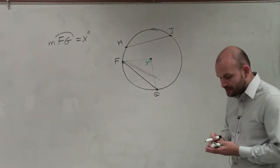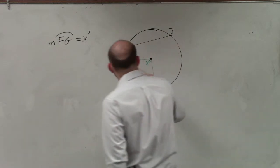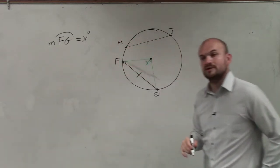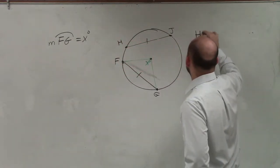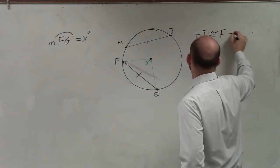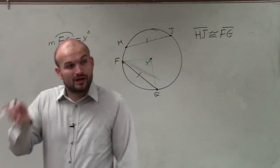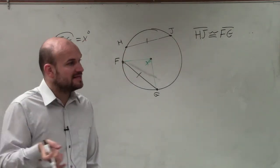So the theorem that we're going to be talking about today is if you have two chords, and those two chords are congruent, meaning HJ is congruent to line FG. So if you have two chords that are exactly the same measurements,